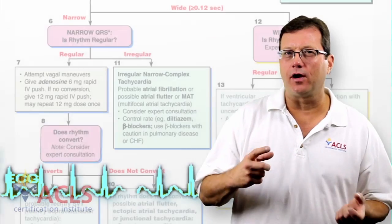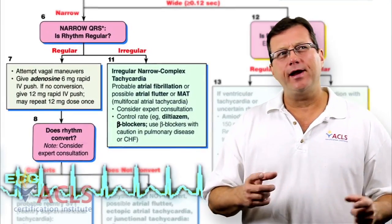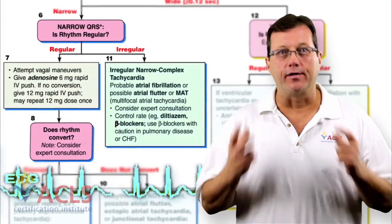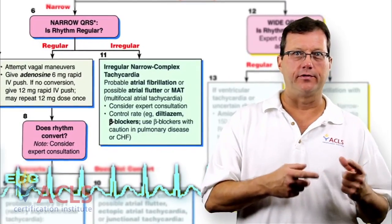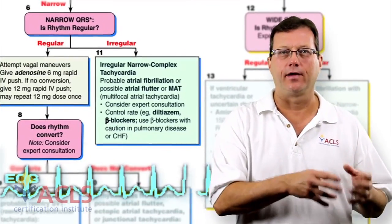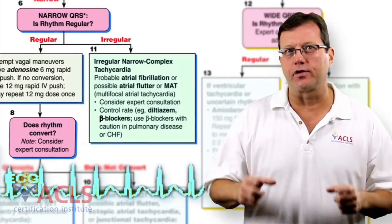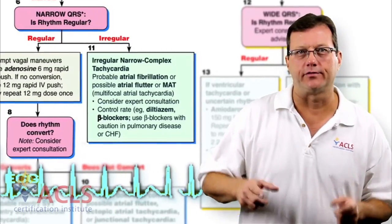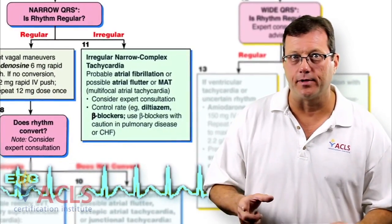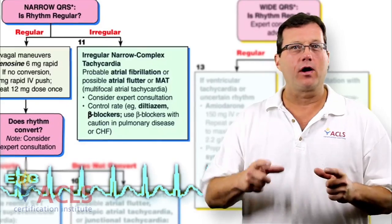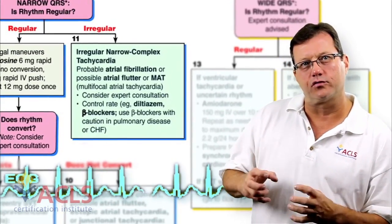In AFib with RVR — a rapid ventricular response — we may not necessarily want to convert this AFib to a sinus rhythm, minimizing the risk of a clot and so on, but we want to be in control of the ventricular response. The ventricular rate is way too fast. That's the problem. So with AFib with RVR, we want to focus on rate control — ventricular rate control.